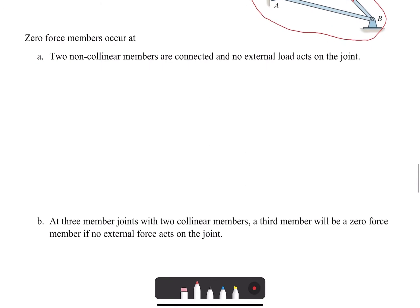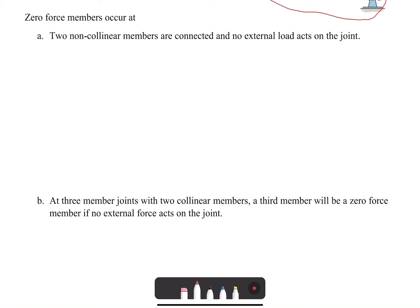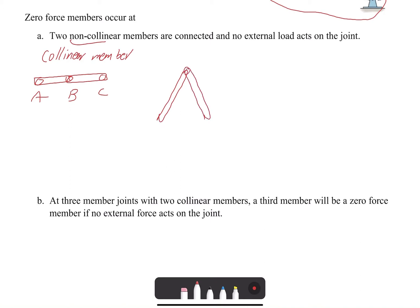There are two conditions under which zero force members occur. The first is when two non-collinear members are connected and no external loading acts on the joint. Collinear means the two members lie along the same line. If the two members are non-collinear — one going in one direction and another going in a different direction — and there's no external load applied at the joint, then both members are zero force members.